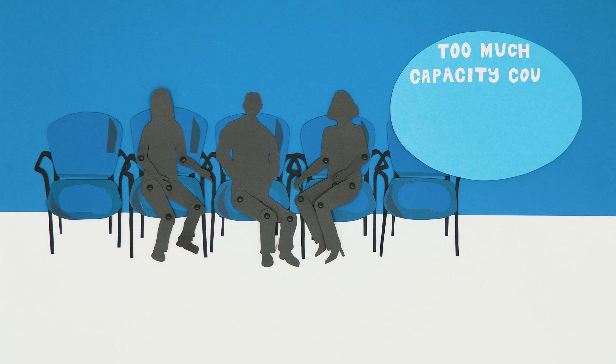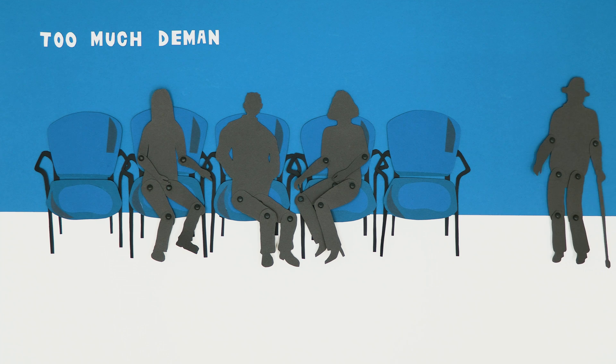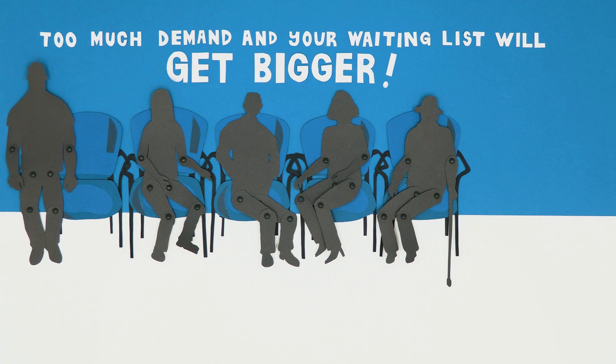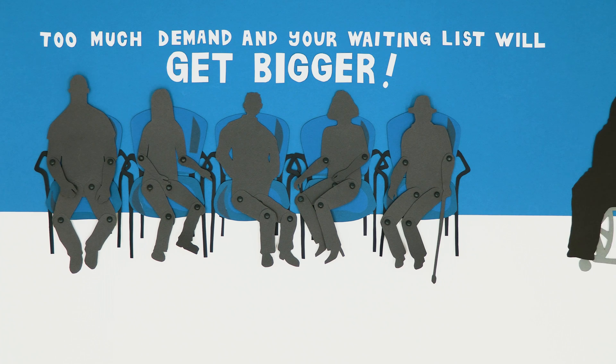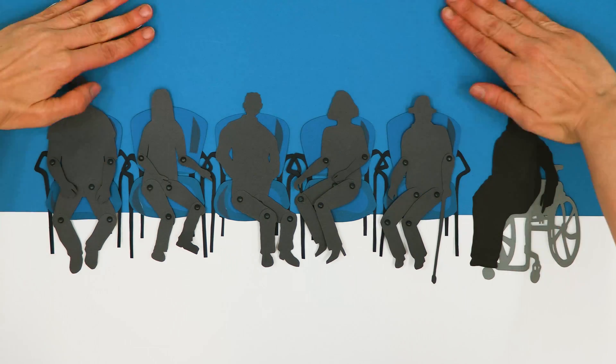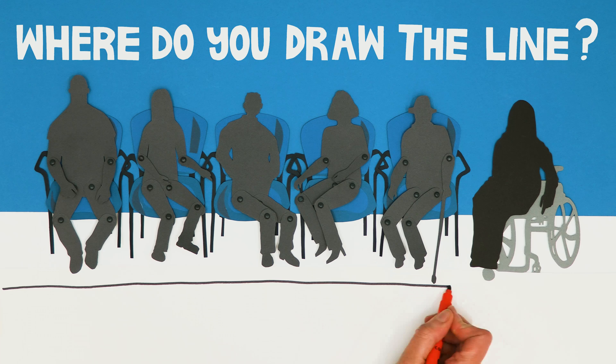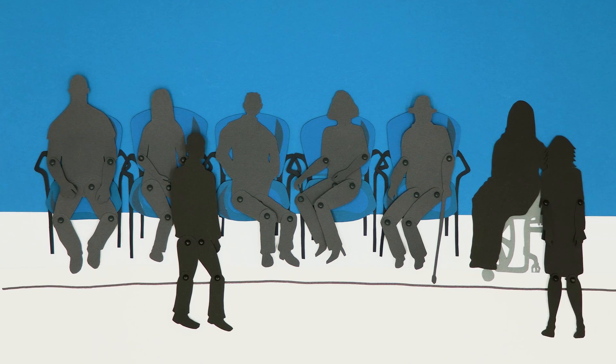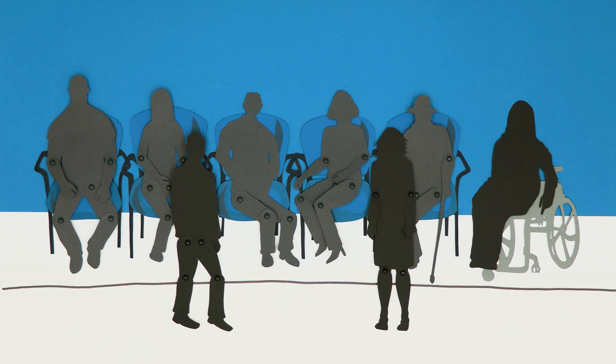Too much capacity could mean wasting valuable resources. Too much demand and not enough capacity, and your waiting list will get longer until it's impossible for you to see all your patients within a maximum waiting time. So where do you draw the line? Just how much capacity do you need to cope with the variability in demand and not allow the waiting list to grow?